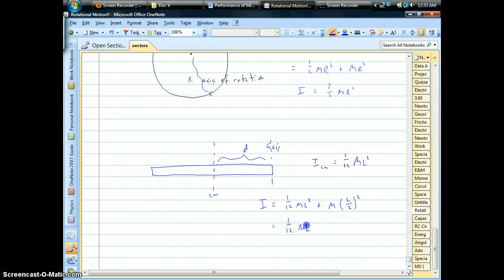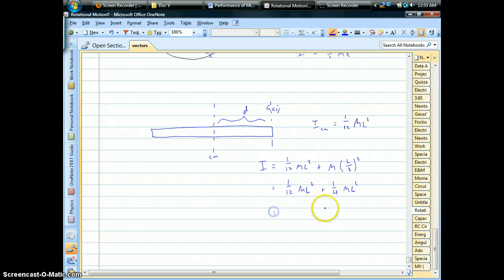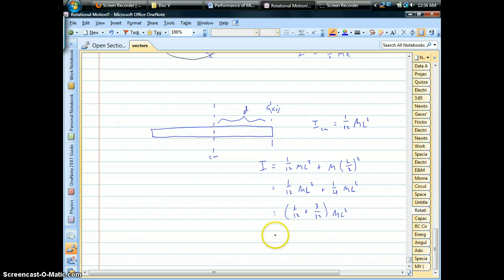That's going to be one-fourth ml squared that we're adding on. And let's see, one-twelfth plus one-fourth, and one-fourth is the same as three-twelfths. That's going to be four-twelfths, which is one-third ml squared. And that's the answer that we've been getting if we used the integral.